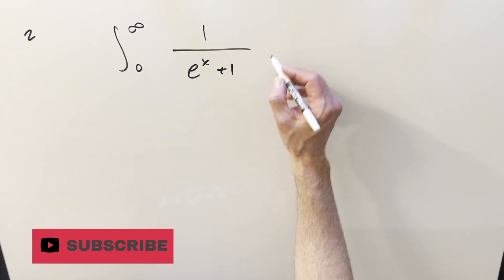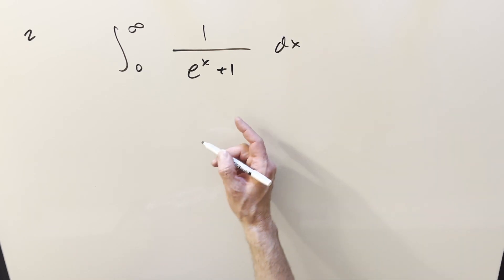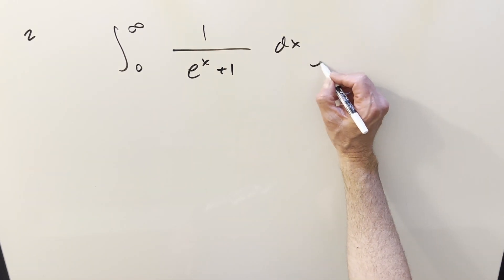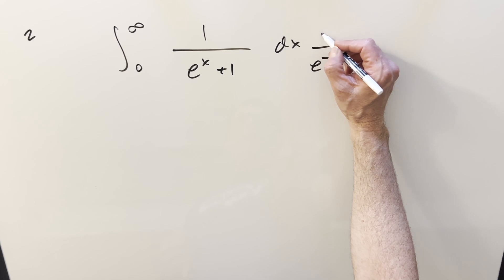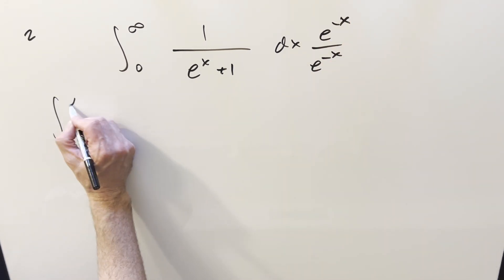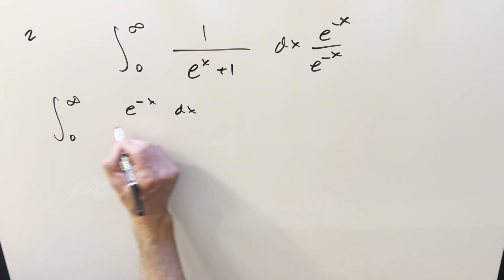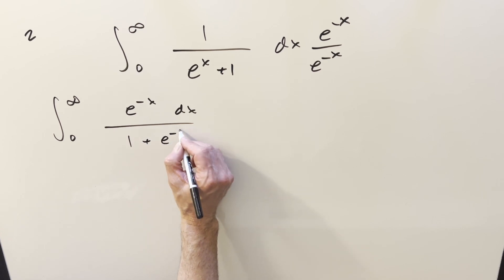I think what I want to do is, in order to set up a u substitution, and also I forgot my dx. So let's put that dx in. Then to clean this up, let's multiply by 1, multiplying by e to the minus x over e minus x. When we do this, now we're going zero to infinity. e minus x dx. Multiply that in, we get 1 plus e minus x.